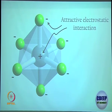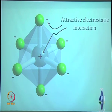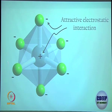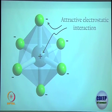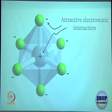These orbitals are most destabilized because they face the ligands directly — the ligand electrons and d-orbital electrons repel each other. All other orbitals — dxy, dyz, dxz — are not facing the ligands directly; they sit in between. Thereby they are not going to be repelled too much. Relative to dx²-y² and dz², they are going to be stabilized.